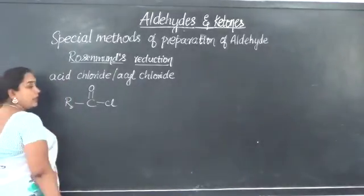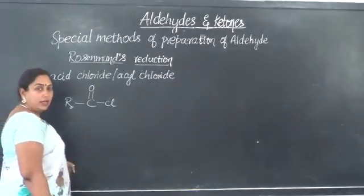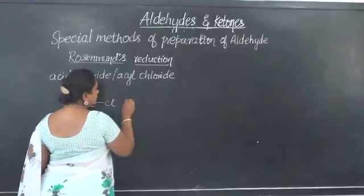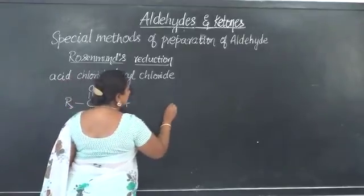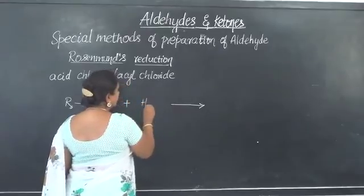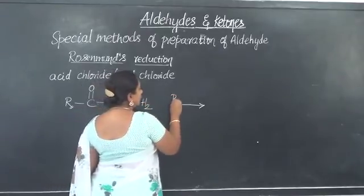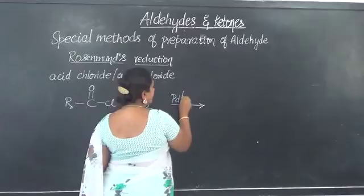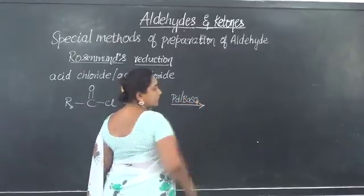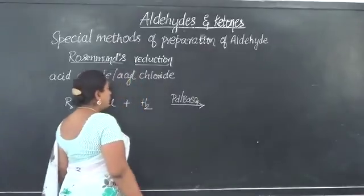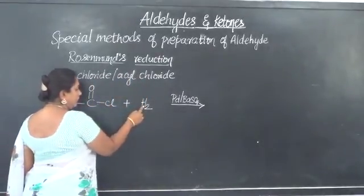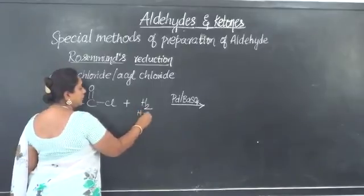Where R can be an alkyl group or the aryl group as the case may be. Now this when treated with hydrogen in presence of palladium as the catalyst supported over barium sulphate, what happens? One hydrogen from here, H2 we have written.